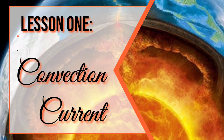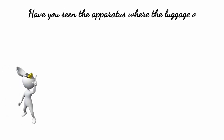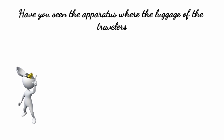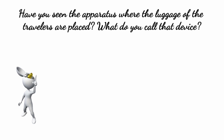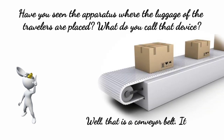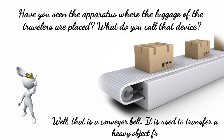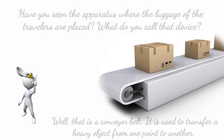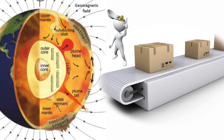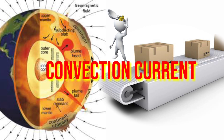Convection current. Have you seen the apparatus where the luggage of travelers are placed? That device is called a conveyor belt. It is used to transfer heavy objects from one point to another. One of the forces that drives plate movement works the same way the conveyor belt does, and that is the convection current.